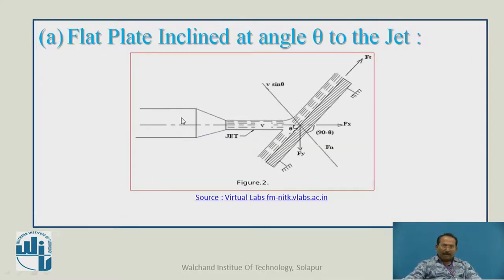Second condition: the pipe, the nozzle, then the jet, but the plate is inclined. The jet goes over here. We have to find out Fx and Fy, two different forces.